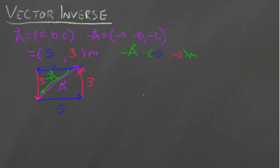So we see that -A is the exact same vector as A only in the opposite direction. That's all it means - it's the inverse direction.